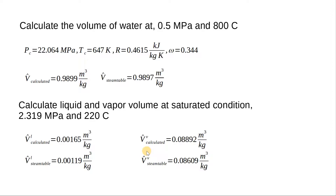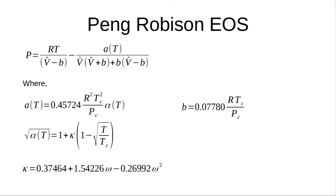The SRK equation of state is thus able to very well predict volumetric properties and helps us determine whether a fluid at given pressure and temperature lies in the superheated vapor region or is a boiling fluid. Let us now look at another equation of state — the Peng-Robinson equation of state, which is a further development beyond SRK.